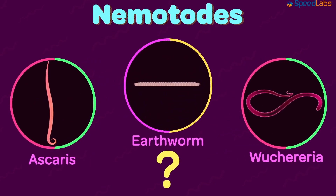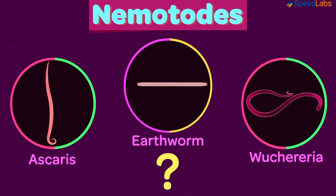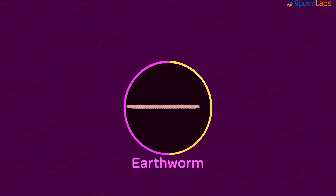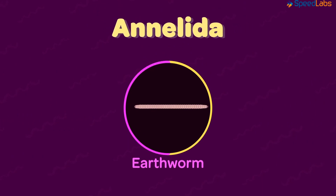Are earthworms also an example of nematodes? Think for a moment. If you said yes, it is probably not the right answer. It is not your fault as earthworms do look like these roundworms, but in reality they are not a part of this family. They belong to the next phylum, which is Annelida. In the next video, we will see some interesting facts about the annelids.